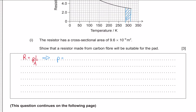Plugging in the values gives ρ = (4.2 × 9.6×10⁻⁶) / 1.25 meters. Everything is already in correct units so no conversion is needed. We find that the required resistivity is 3.2×10⁻⁵ ohm meters.